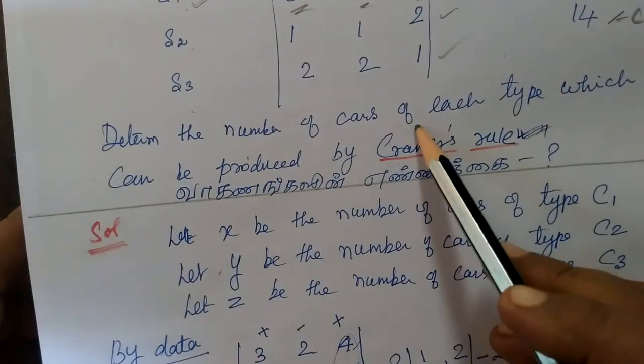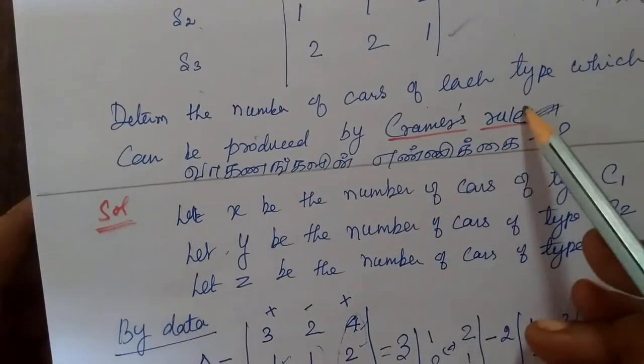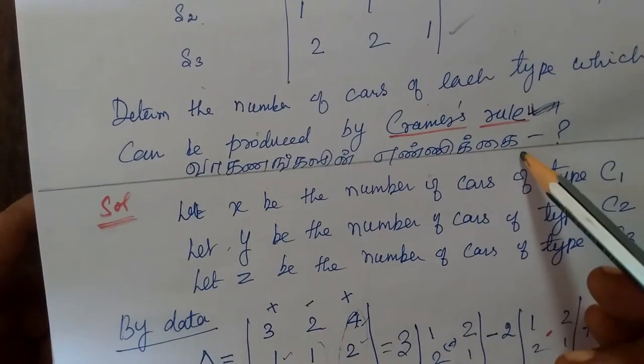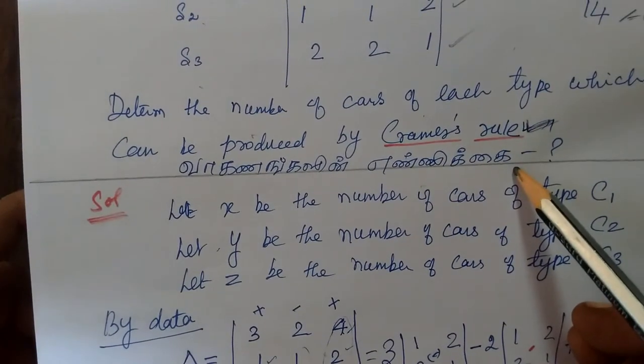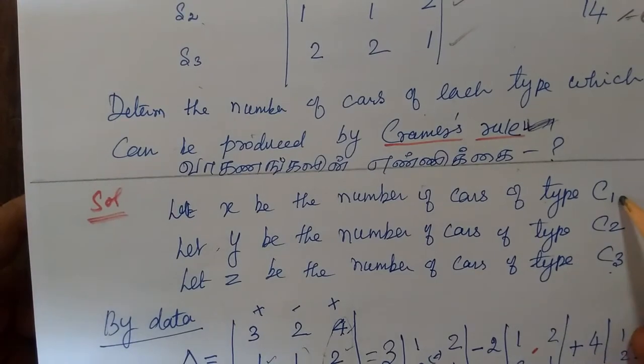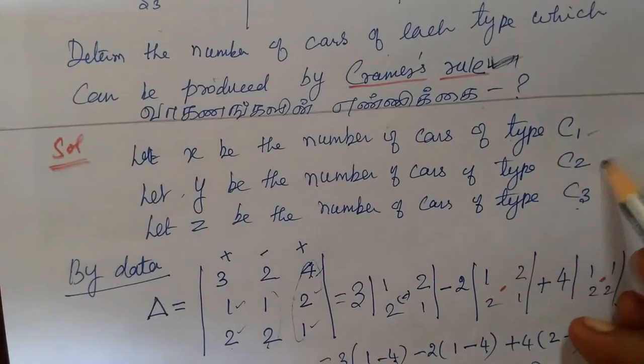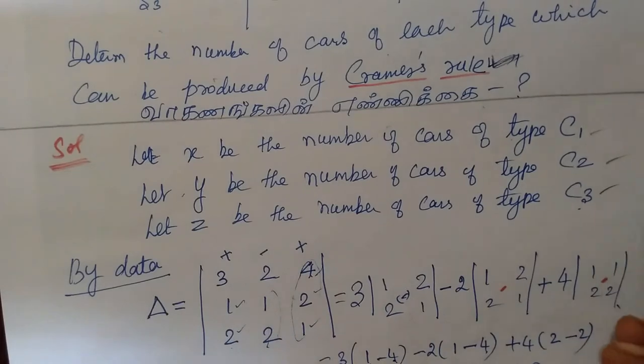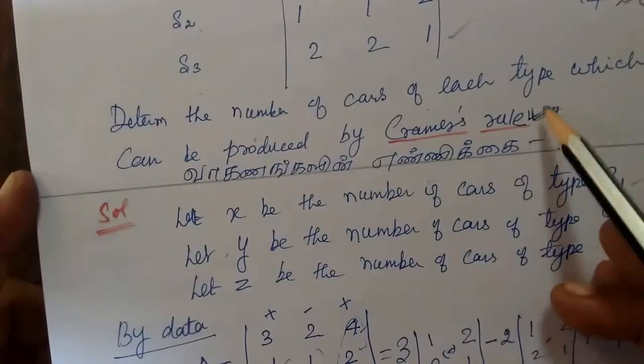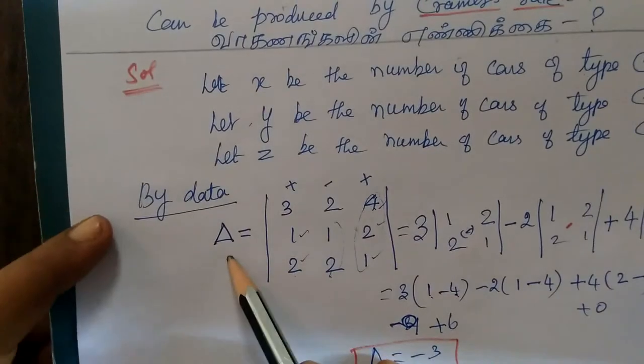We need to find the number of cars of each type. Using Cramer's rule, we can find it. So, let x be the number of cars of type C1, y for C2, and z for C3. Now, by Cramer's rule, first of all, we find delta.